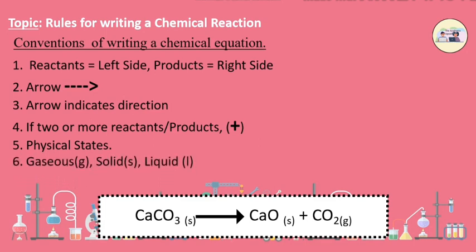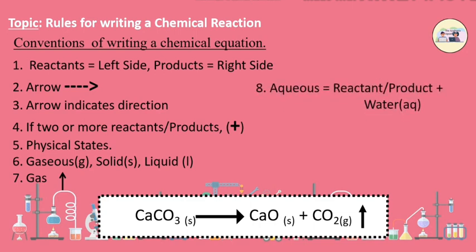To make the chemical equation more informative, the physical states of the reactants are indicated in the equation. The gaseous, liquid and solid states are indicated by writing the letters G, L and S respectively in brackets. Moreover, if the product is gaseous, instead of G, it can be indicated by an arrow pointing upwards. When reactants and products are in the form of solution in water, they are said to be present in aqueous solution state. This state is indicated by putting the letters AQ in bracket after their formulae.